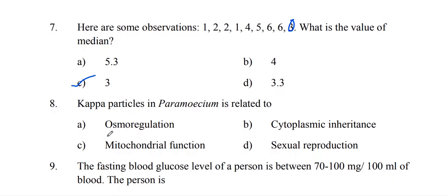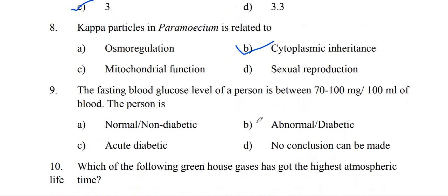Kappa particles in Paramecium are related to cytoplasmic inheritance. The fasting blood glucose level of a person between 70 to 100 mg per 100 ml of blood means the person is normal or non-diabetic.